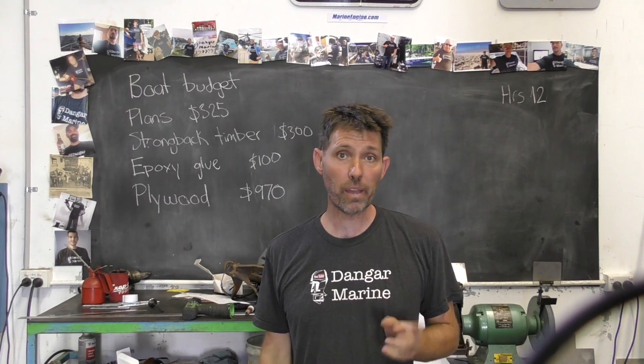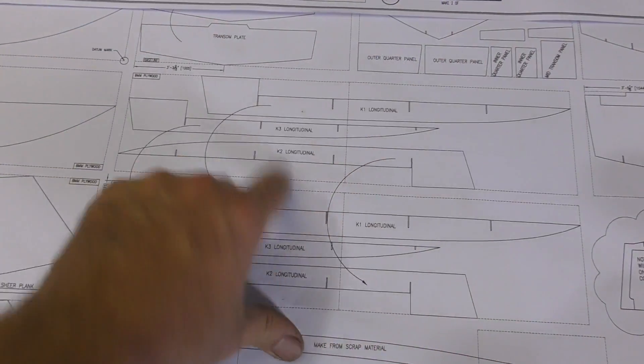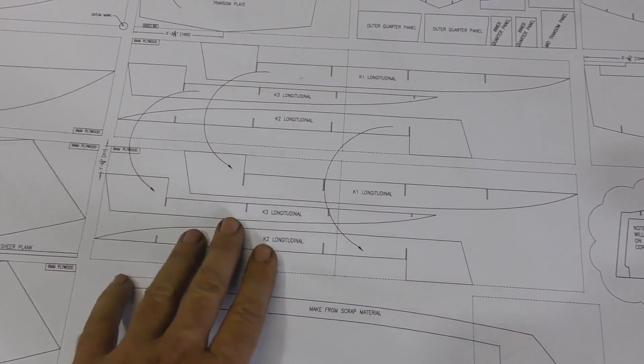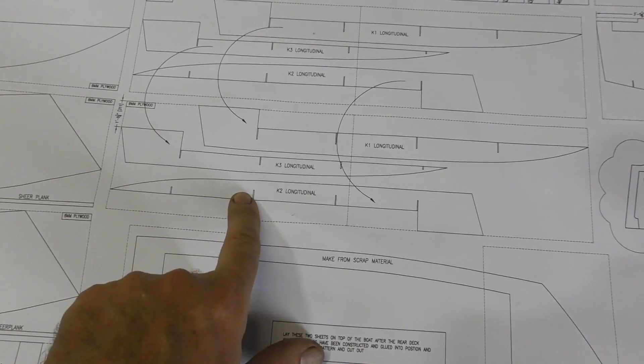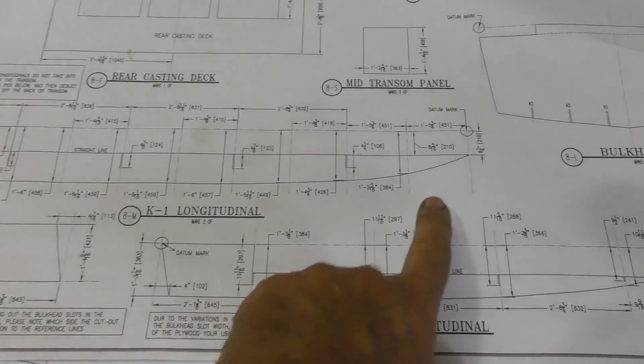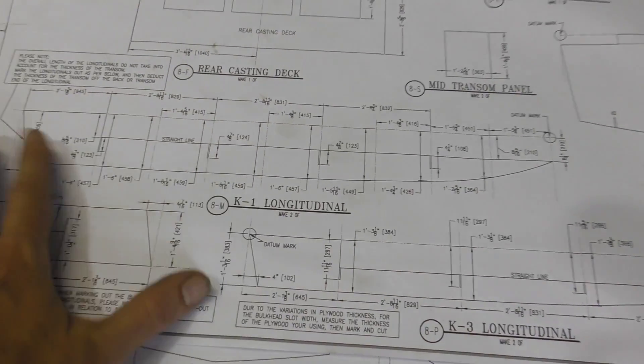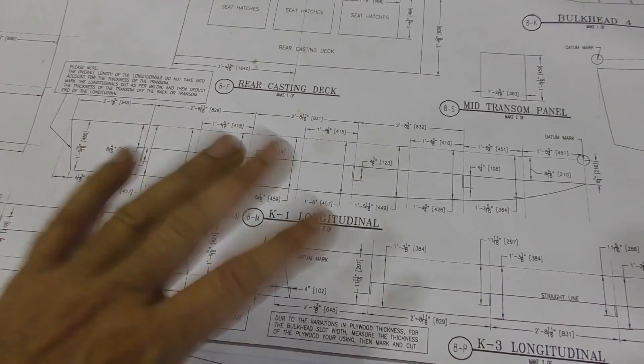Alright, we'll kick things off today by having another look at the plans. These are the six longitudinals I'm looking to make and these are the four sheets of ply they're cut out from. Over on this sheet we've got the measurements that we need in order to do this lofting, to draw them up and eventually cut them.